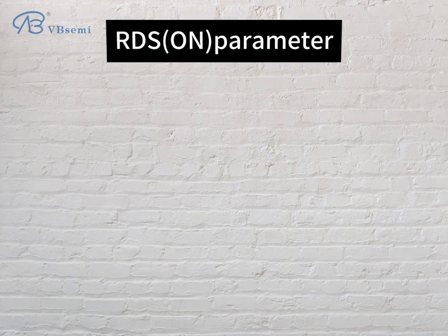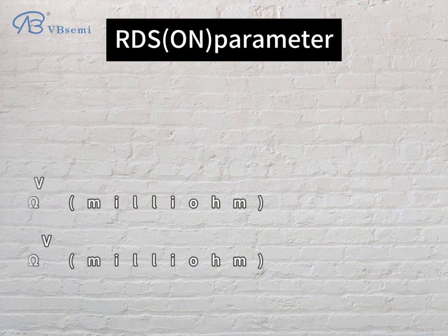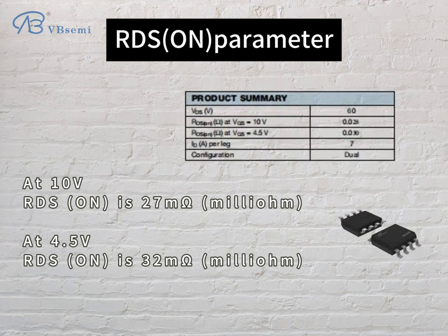RDS-ON parameter: at 10V, RDS-ON is 27mΩ. At 4.5V, RDS-ON is 32mΩ.